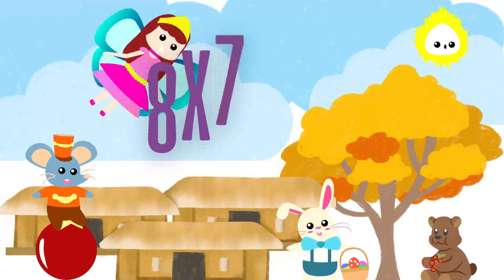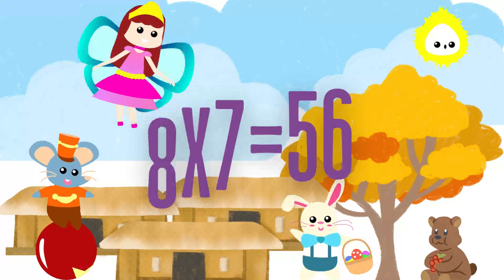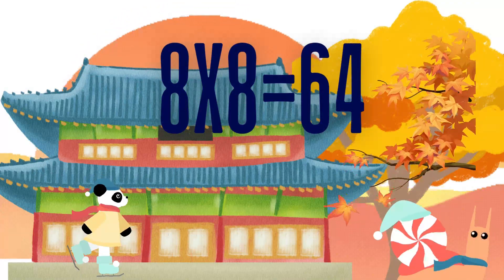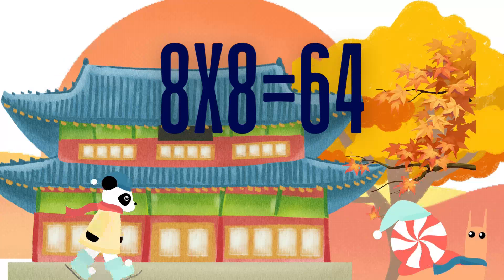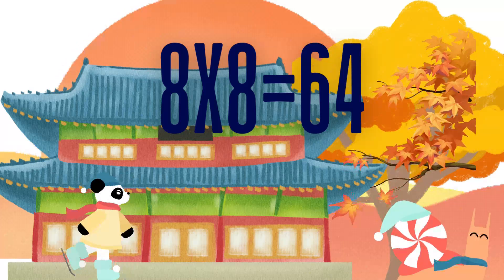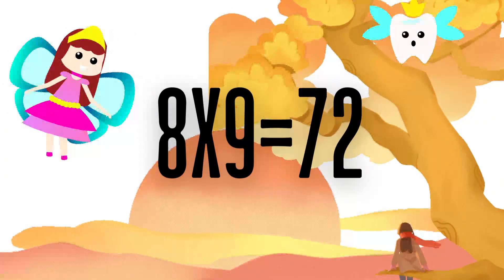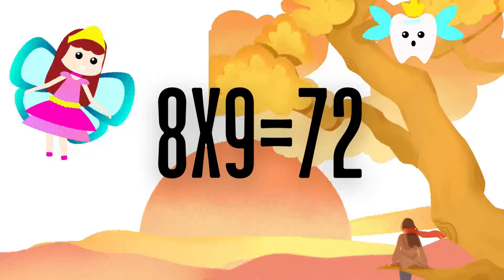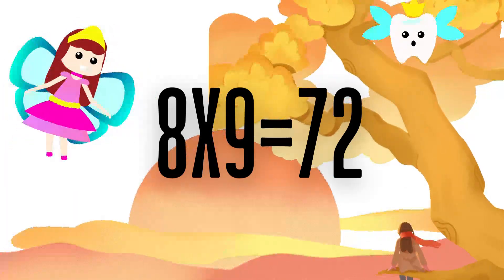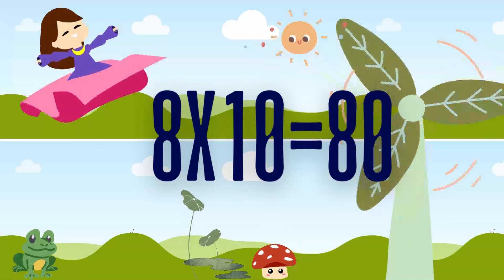8 times 7 is 56. 8 times 8 is 64. 8 times 9 is 72. 8 times 10 is 80.